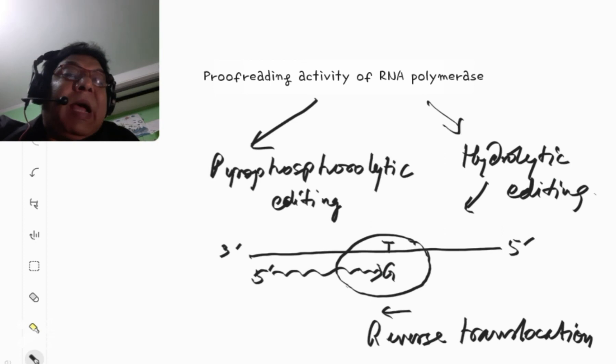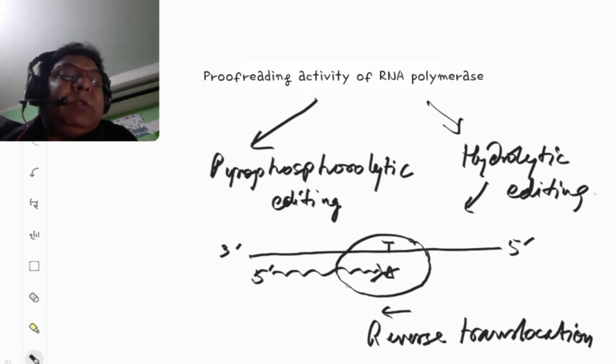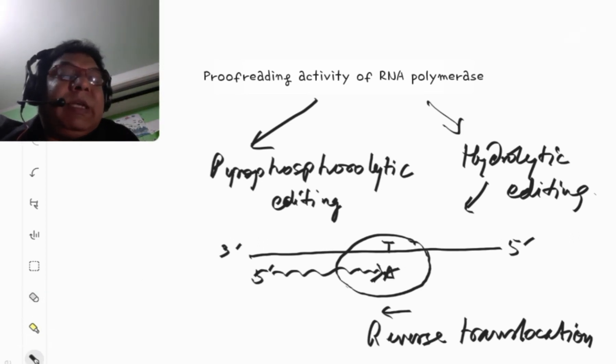And by a hydrolytic cleavage, it removes the G residue from there, and it brings a normal base that is A. So, this is how this hydrolytic editing occurs.